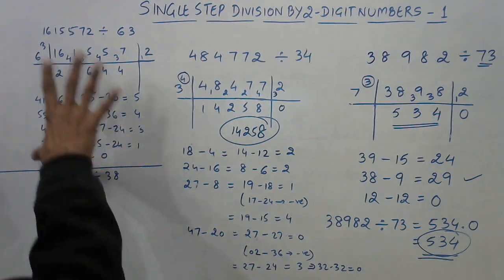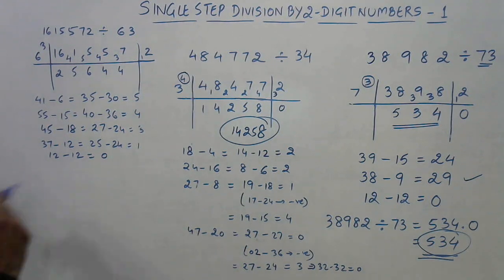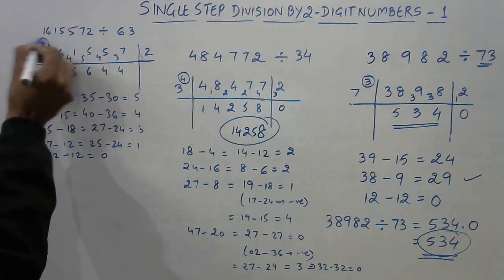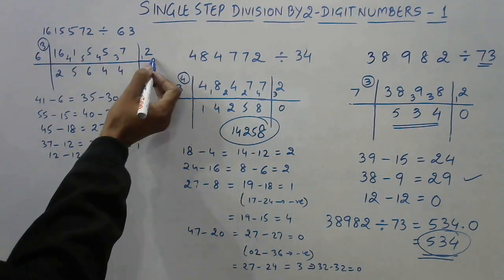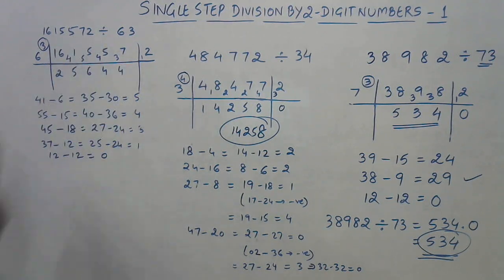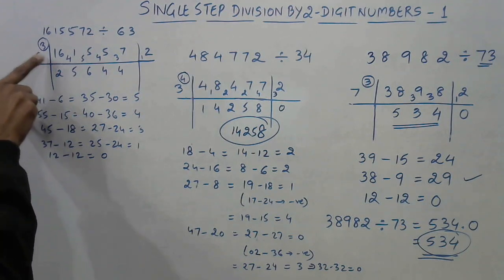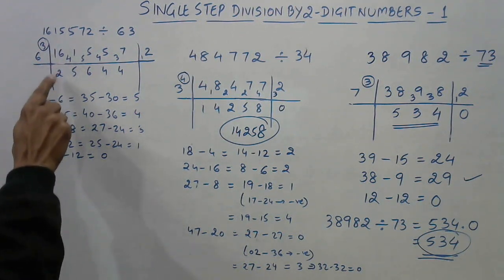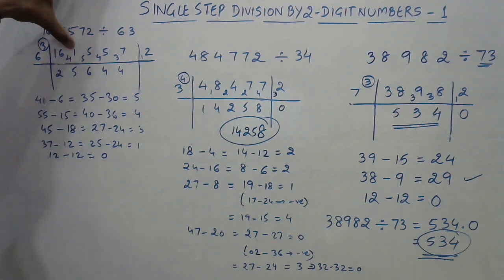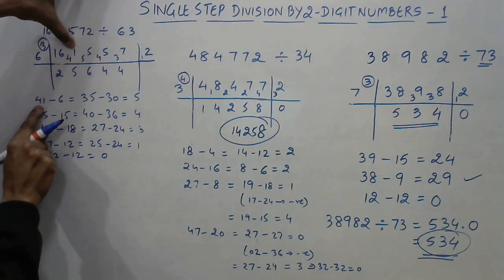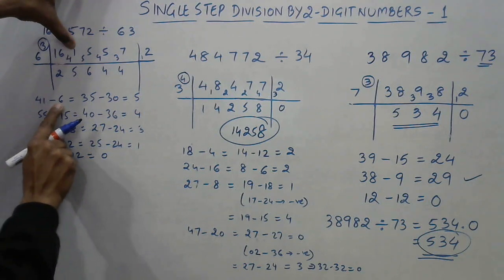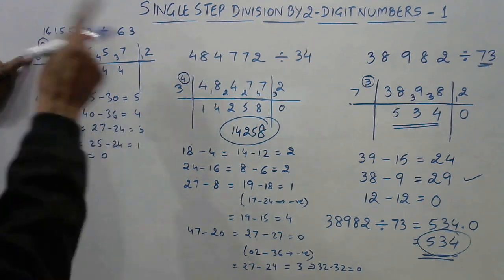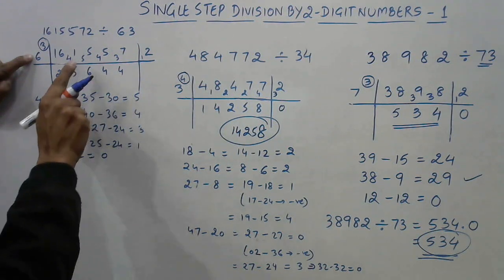The third example is 1615572 divided by 63. Again, 63 means 6 and 3 are separated out, and one digit is separated from the right-hand side of the dividend, leaving 161557 as the dividend part. Six multiplied by anything won't get close to 1, so I take the pair 16. Six times 2 is 12, and 16 minus 12 is 4, written here. This becomes 41, and 3 times 2 is 6 to be subtracted, giving 35. Six times 5 is 30, remainder 5, written here.